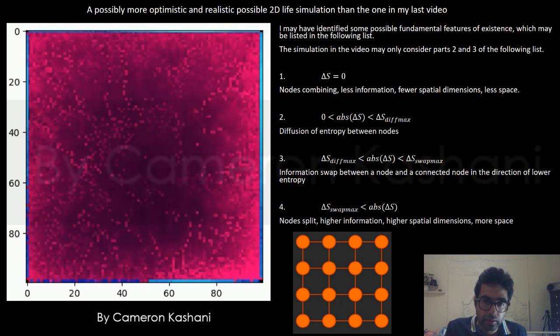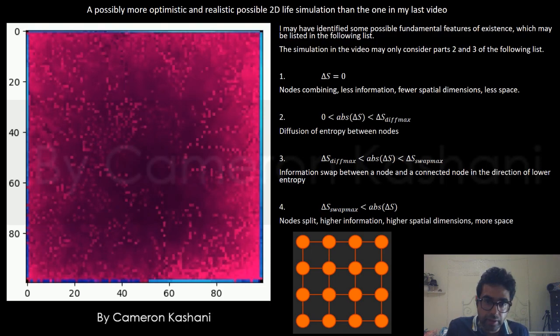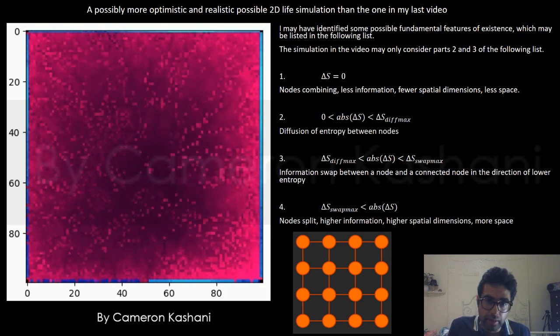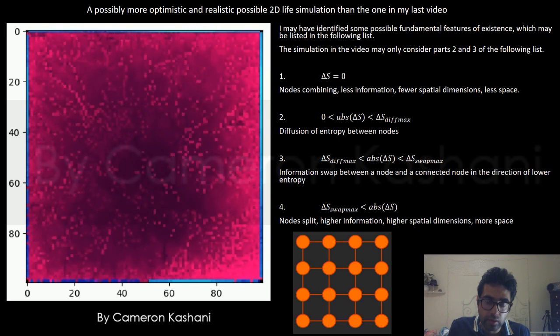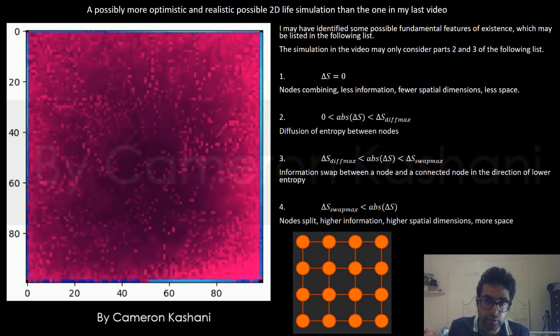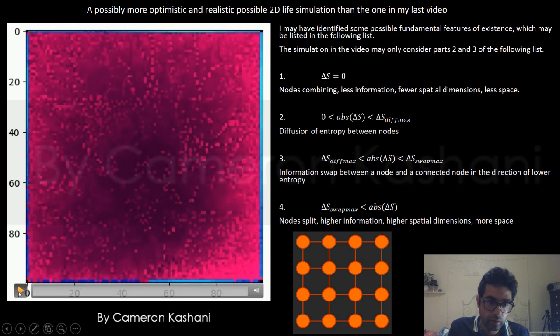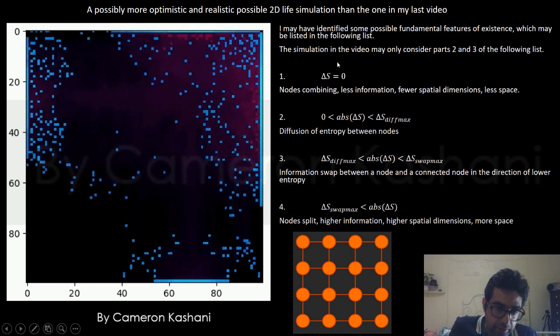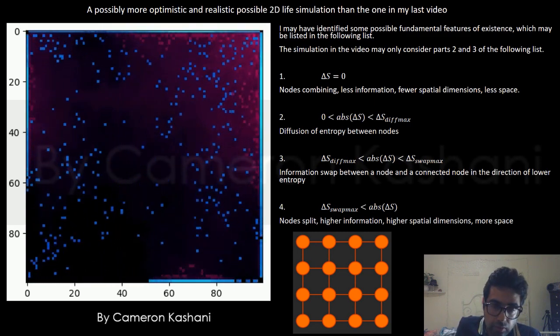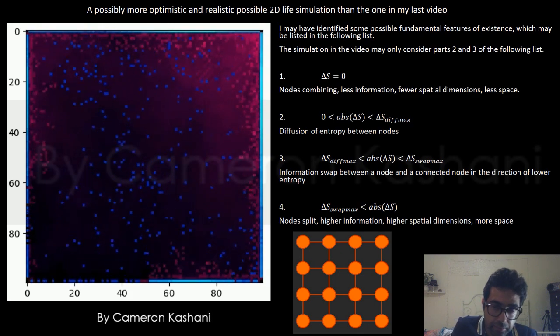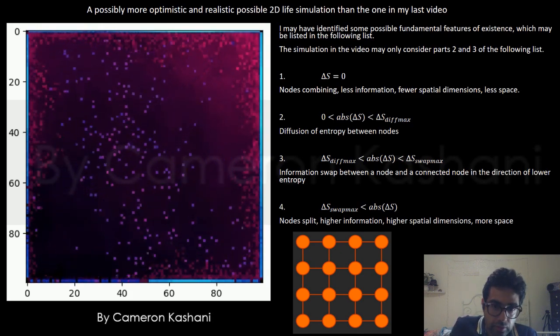Between that threshold and another upper threshold, there may be an information swap between delta S diff max, between the entropy gap threshold and another upper entropy gap threshold between two nodes.